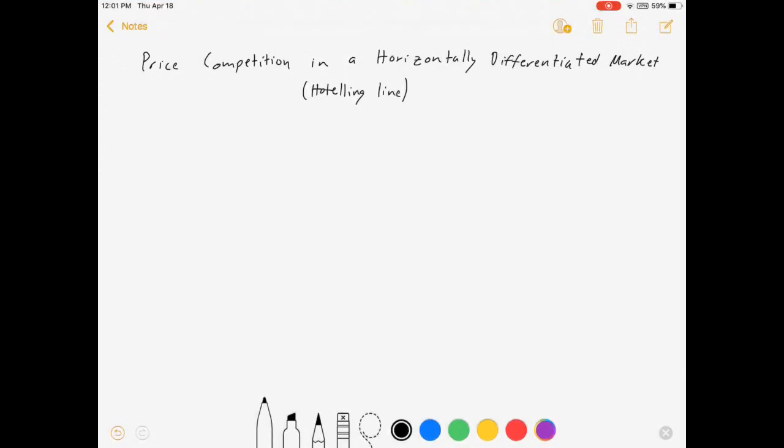I'm going to start with the hoteling line. So let me introduce you to the line. There it is. It's a line, just like I said. I'm going to assume it goes from zero to one. What it represents is consumer locations and firm locations in our marketplace.